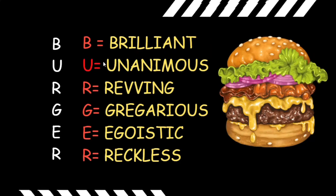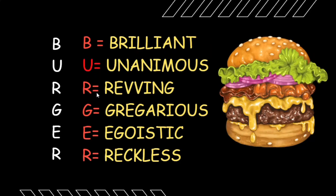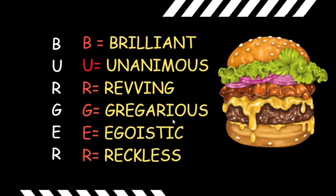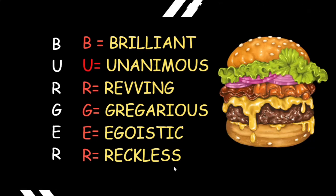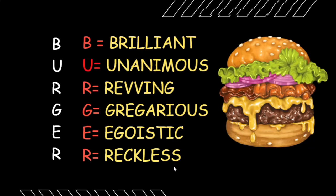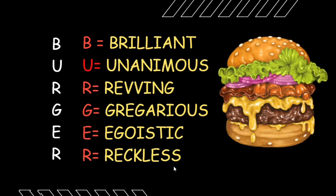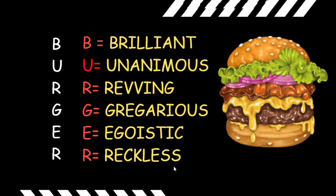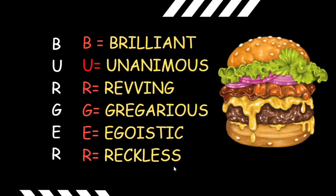B for brilliant, U for unanimous, R for revving, G for gregarious, E for egoistic, and R for reckless. Now this all depends on the level of children — if they are first graders, these vivacious vocabulary words may be challenging for them. So you can start giving words at their level and make cards like this.